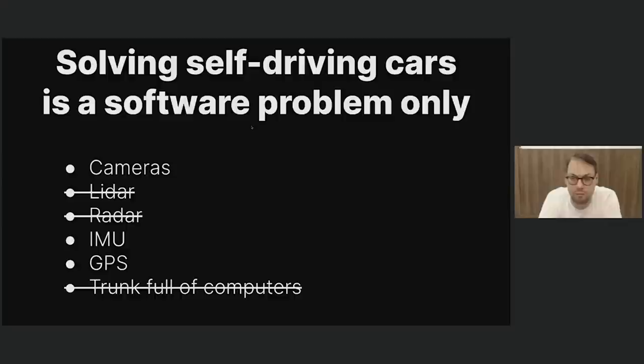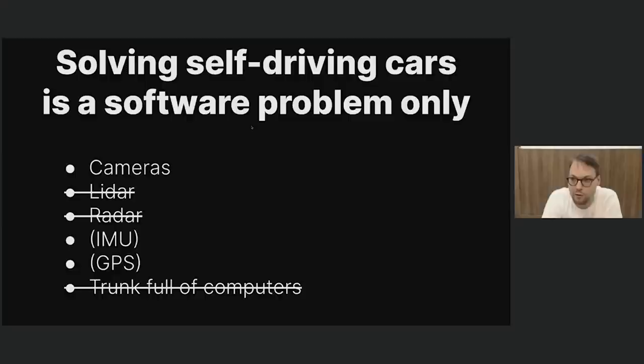An IMU and GPS are kind of optional for the driving part. Over time, our models have become very good at estimating the motion the car is going through — rotational velocities, accelerations, and velocities. And with GPS, you can drive through a tunnel without it. The most important part is the cameras. If you have some very good cameras, which the Comma 3 has, that should be all you need — that's what a human drives with. Good cameras are very important, and the cameras on the Comma 3 are really amazing.